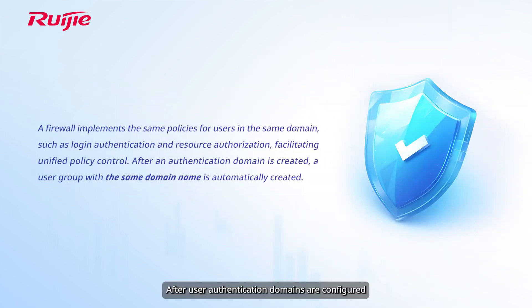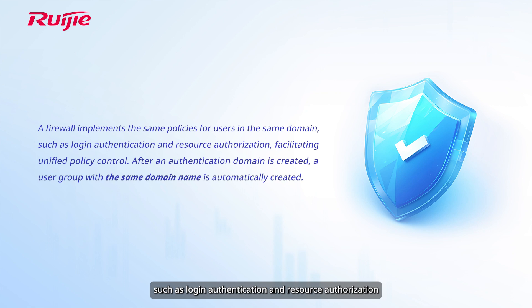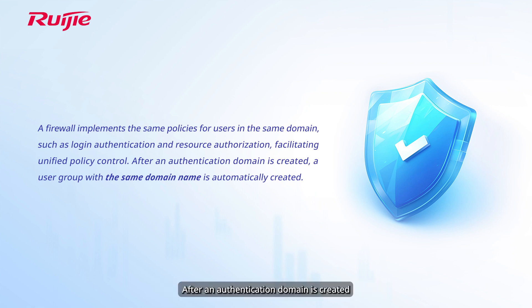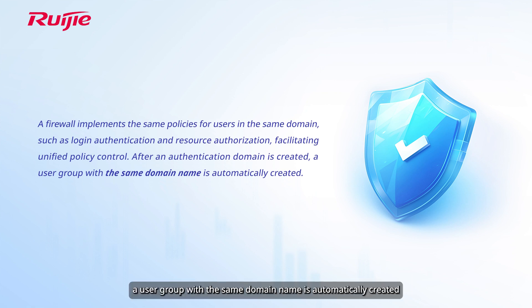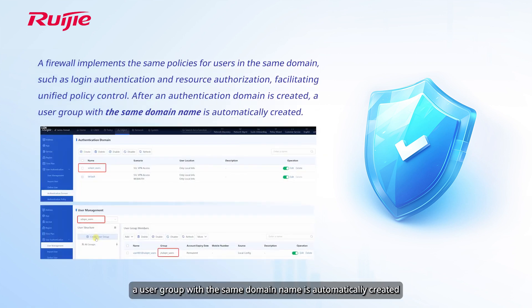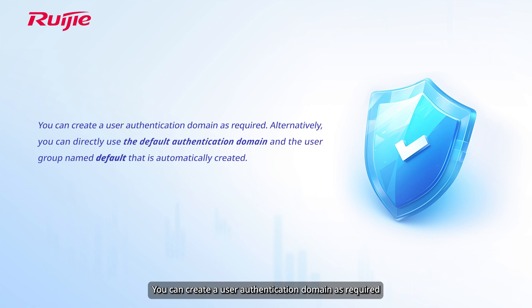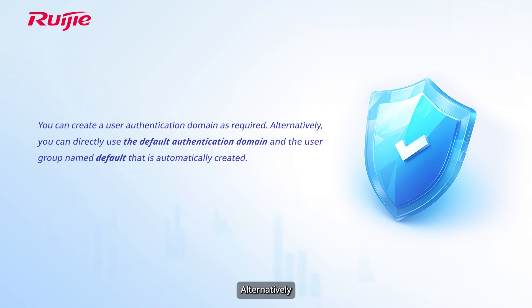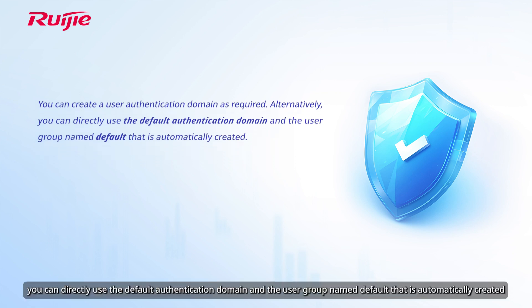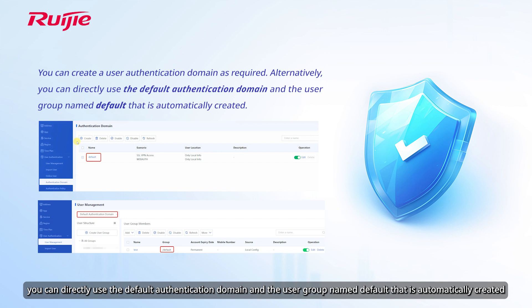After user authentication domains are configured, a firewall implements the same policies for users in the same domain, such as login authentication and resource authorization, facilitating unified policy control. After an authentication domain is created, a user group with the same domain name is automatically created. You can create a user authentication domain as required, or directly use the default authentication domain and the user group named Default that is automatically created.